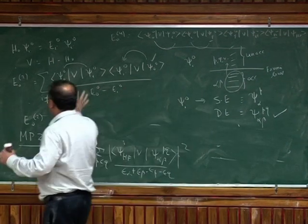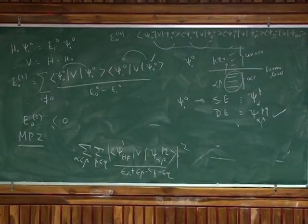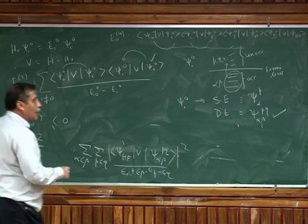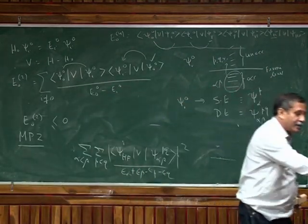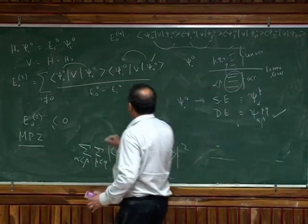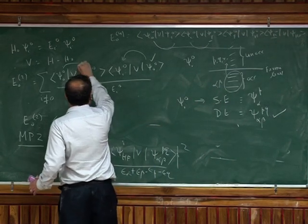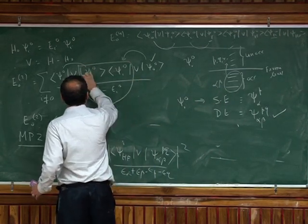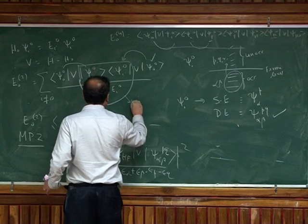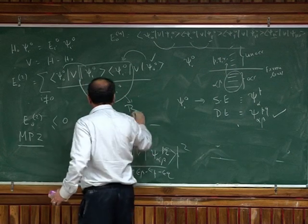Alright, so this is basically the framework of perturbation theory. One can do lots of algebra. For example, people have called this operator sum over i not equal to zero. K is projection operator.